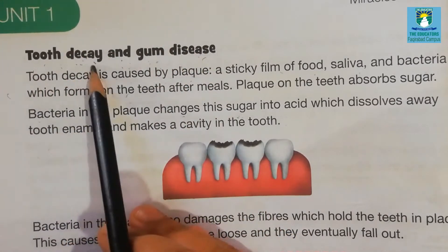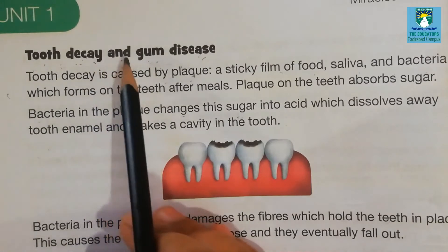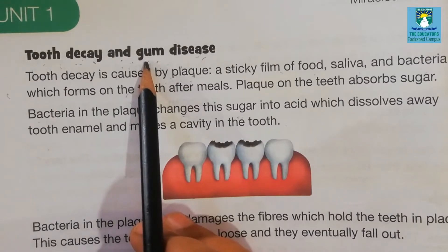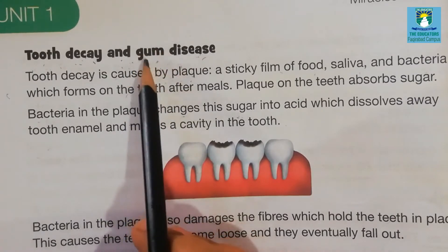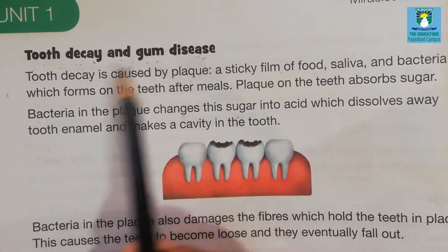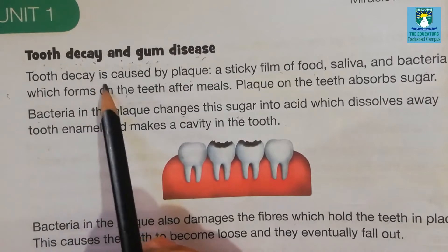What do you mean by tooth decay? Tooth decay means when the tooth becomes damaged. And gum disease — the gum is the soft part present inside our mouth. When there is any disease caused in the gums, it is known as gum disease.